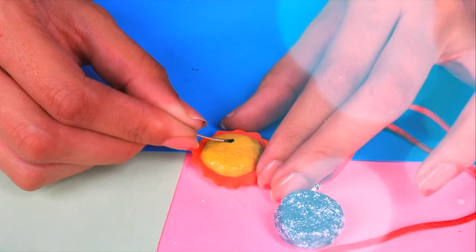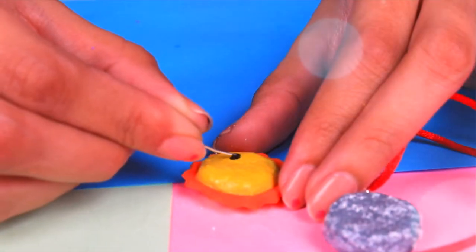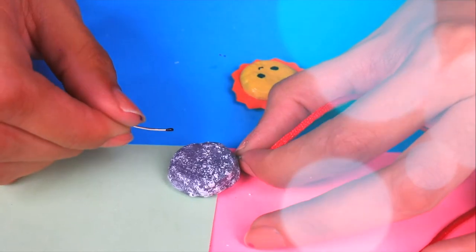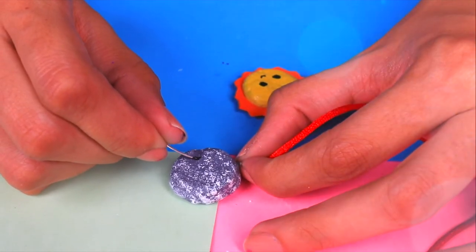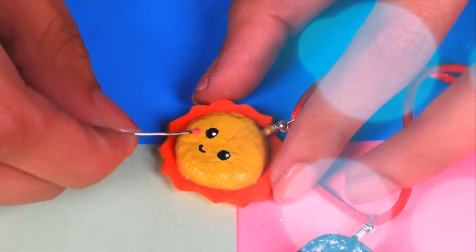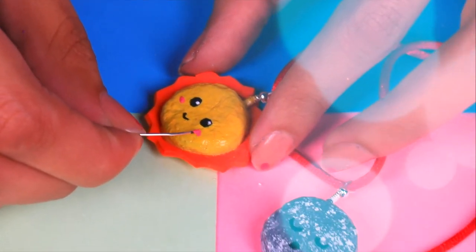We will draw a cute face on each one. Okay, so we will start with the eyes of the sun. Very good! And we will continue with the moon's eyes but they are going to be closed. Then the pupils. And finally we will put some blush on their cheeks so they look adorable.